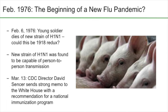Fast forward to February 1976: there was a case of a young soldier who died of a new strain of H1N1. The fact that this was H1N1—the strain that caused the 1918 pandemic—raised the specter of whether this could be 1918 all over again. Additionally, it killed an otherwise healthy young soldier, echoing the 1918 flu's unusual concentration among 20- to 40-year-olds. Even more worryingly, this new strain was found to be capable of person-to-person transmission.